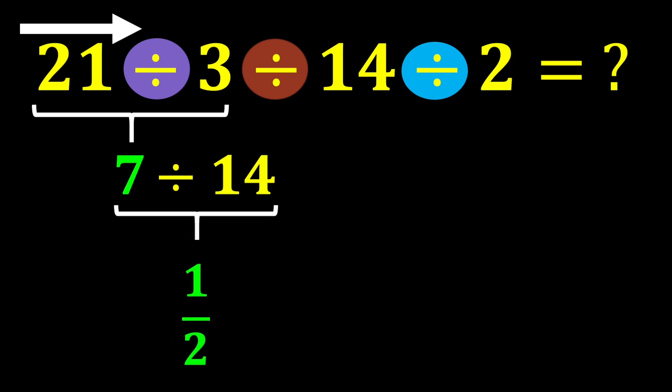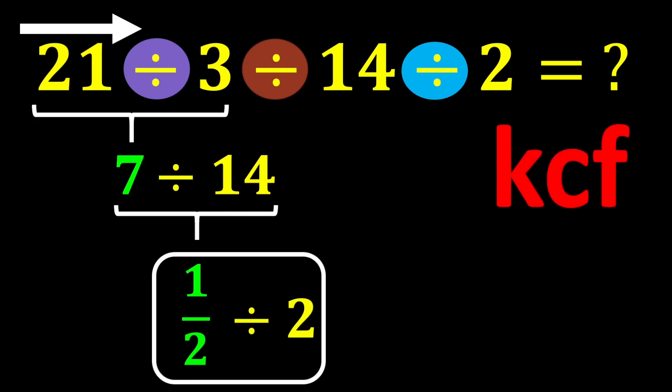In the end, we must calculate 1 over 2 divided by 2. To solve this part, we use the KCF rule.